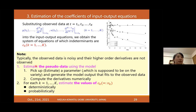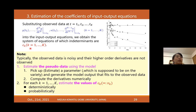Since observed data is noisy in practice, we estimate a parameter that fits the data—this parameter is supposed to lie on the variety. Using this parameter, we generate the model output which fits the data, and from this output we compute the derivatives numerically. Although the values of C_k are assumed to be uniquely determined, there are some ways to compute these values: one is deterministic computation, and the other is probabilistic computation.